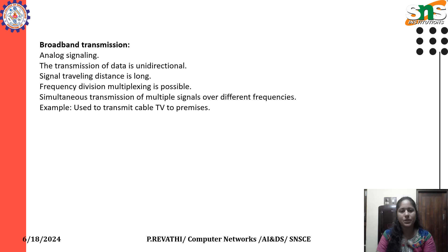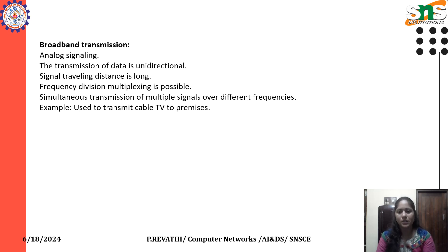Broadband transmission is used in analog signaling. The transmission of data is unidirectional, and signal traveling distance is long. Frequency division multiplexing is possible, allowing simultaneous transmission of multiple signals over different frequencies. Example: it is used to transmit cable TV to premises.